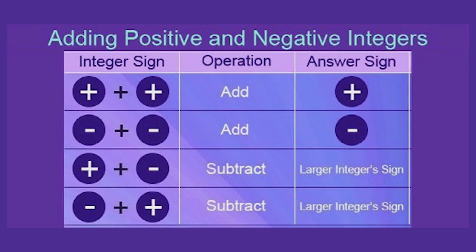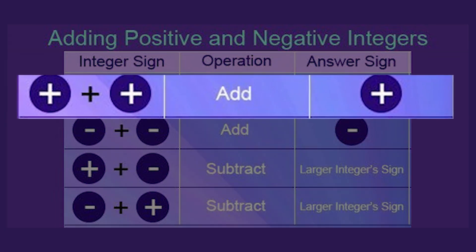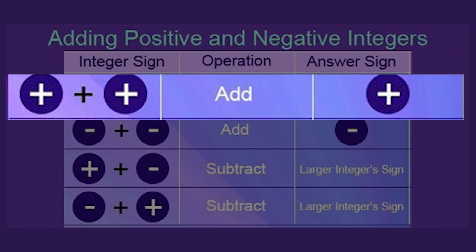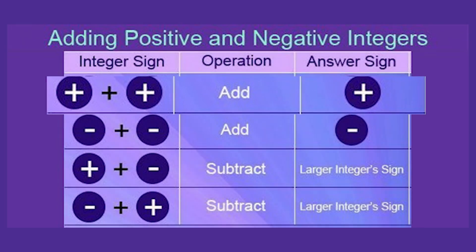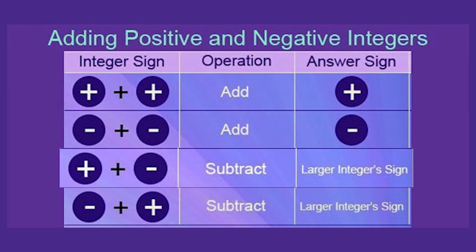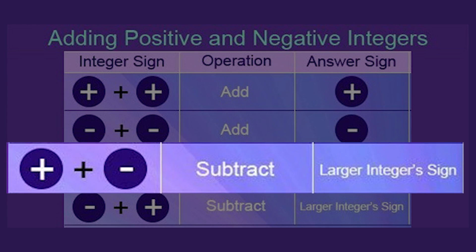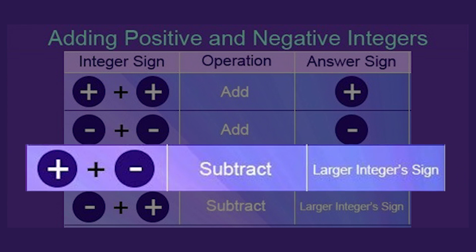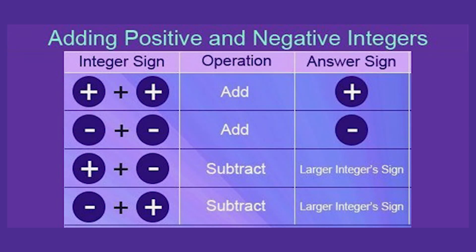Let's take note of the rules in adding integers. Rule 1: to add integers having the same sign, keep the same sign and add the absolute value of each number. Rule 2: to add integers with different signs, keep the sign of the number with the largest absolute value and subtract the smallest absolute value from the largest.